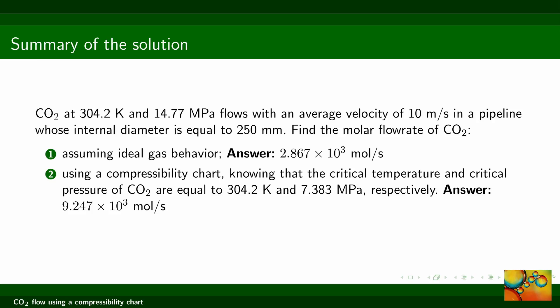Here is a summary of the solution. The key observation is that by using the compressibility chart, the molar flow rate is more than three times the value that we found using the ideal gas assumption. So there is a huge difference. Which one should be more accurate? Definitely the one we found using the compressibility chart. In this problem it is absolutely crucial taking into account the compressibility of the gas for a realistic design of the pipeline.